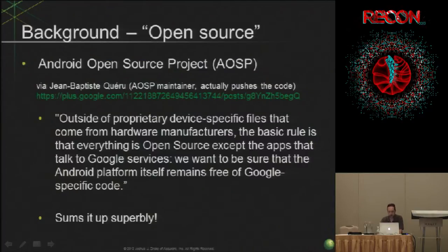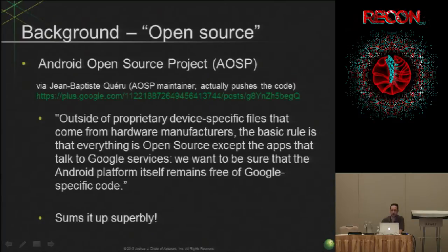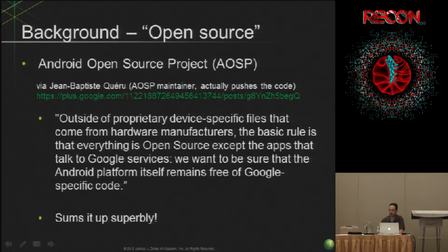Back to the proprietary stuff. JBQ is the guy who actually pushes all the open source stuff for Android — when Android makes a release, it's his job to wade through the mess of commits. He said, outside of proprietary device-specific files, everything's open source except for the Google-specific code. That summed it up really well, because it pretty much does fall into these two groups.